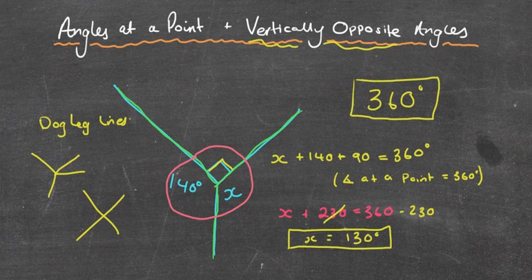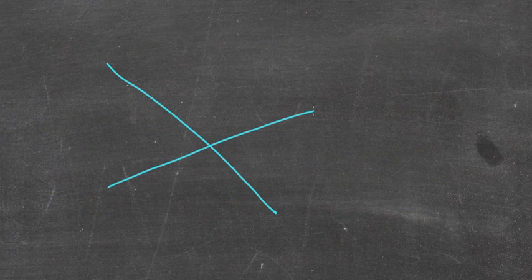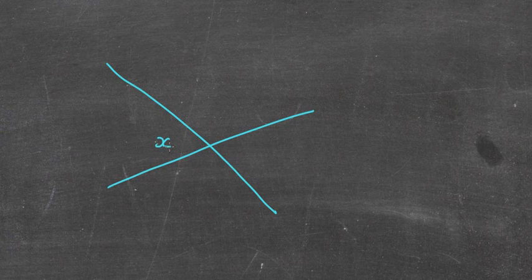Okay, so let's have a look at a vertically opposite angle. I'm now going to use two directly straight lines. Okay, so they're nearly straight. Okay, so two straight lines. And the question might have x over here and 50 degrees over here.